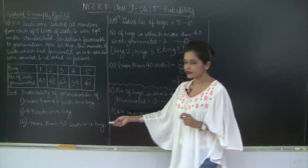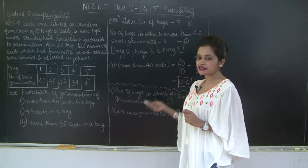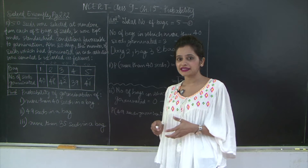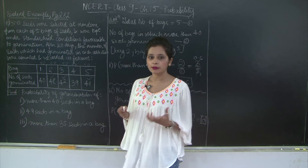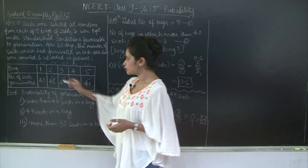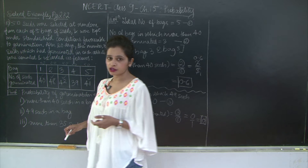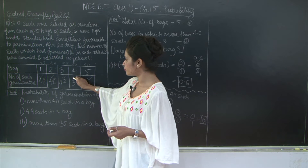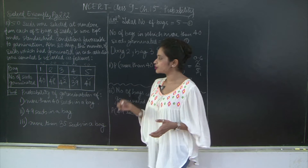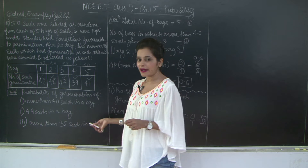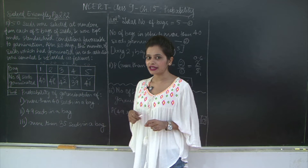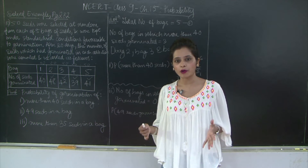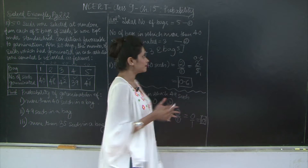Now the third sub-question: more than 35 seeds germinated in a bag. We count the total number of bags in which the number of seeds germinated was more than 35. Since all bags had counts of 40, 48, 42, 39, and 41 — all of which are more than 35 — every bag qualifies: bag 1, bag 2, bag 3, bag 4, and bag 5. That gives us 5 bags out of 5.